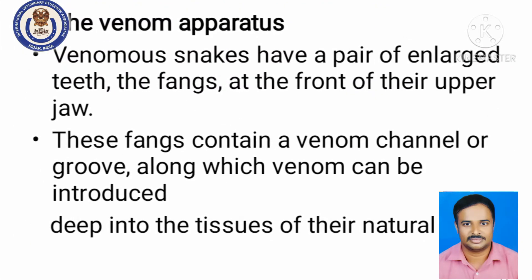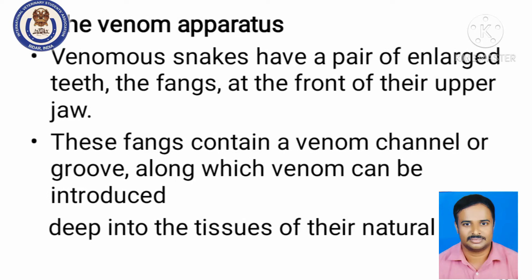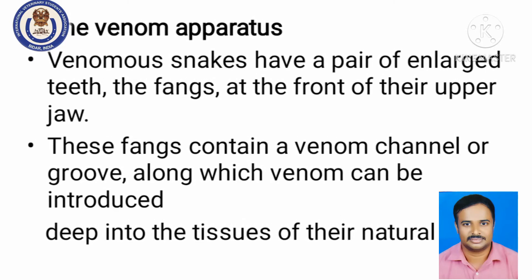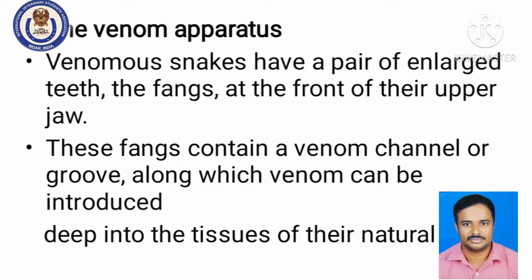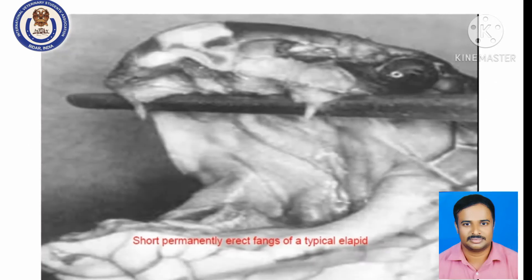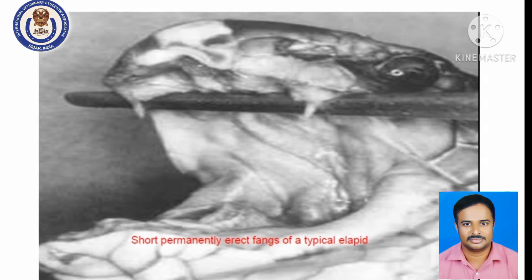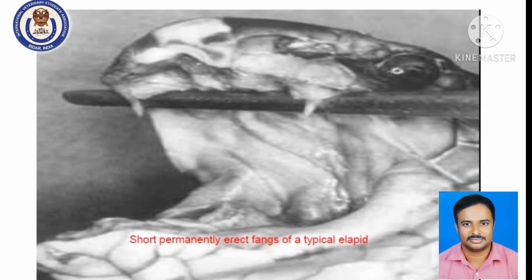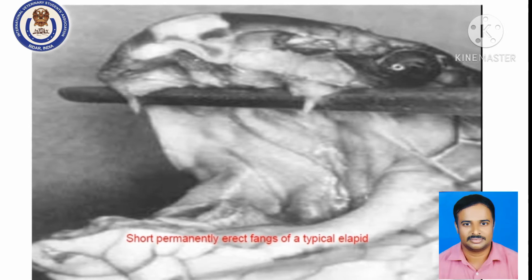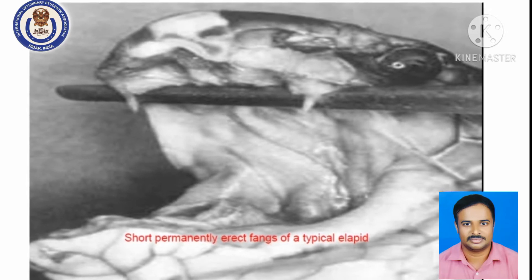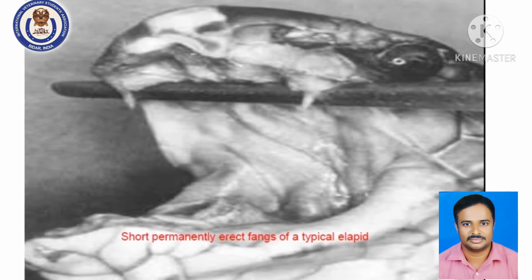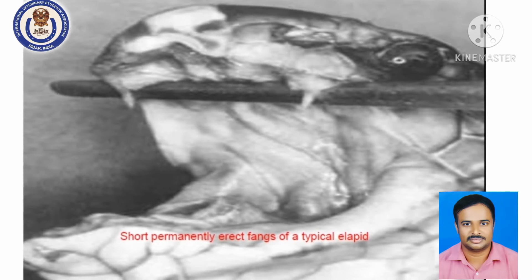For zootoxins, the venomous apparatus is very important. Venomous snakes have a pair of teeth called fangs, with which venom is injected into the body. These are present at the front of their upper jaw. The fangs contain a venom channel or groove along which the venom can be introduced deep into the tissues of the prey whenever they bite or attack an animal. These are short, sharp, erect fangs — the poisonous teeth present in the animal.